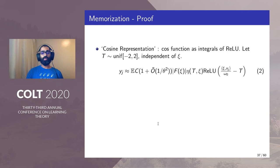That is if you have t uniform in (-2, 2) and independent of x_i we have y_j to be approximately equal to this formula which is in terms of ReLU instead of cosine.